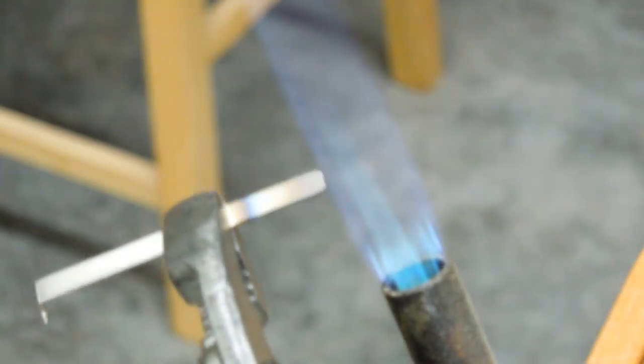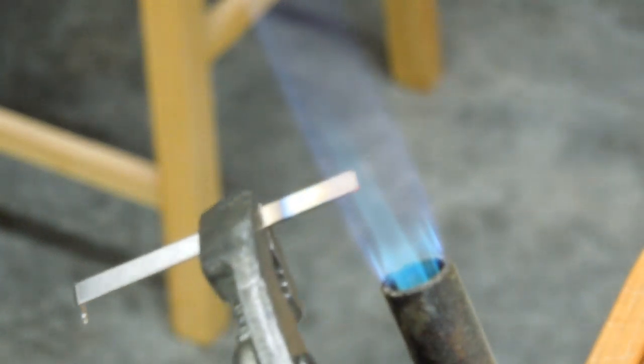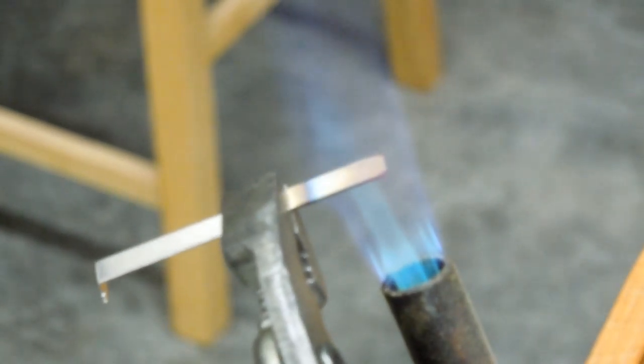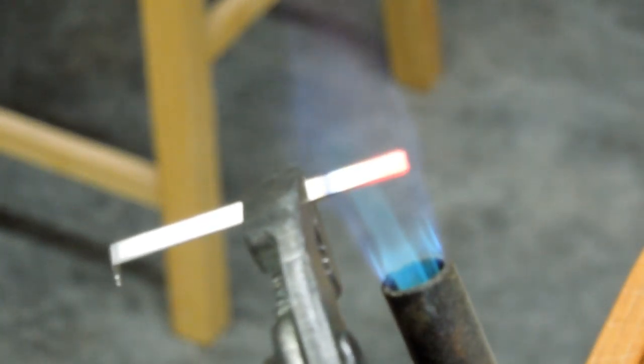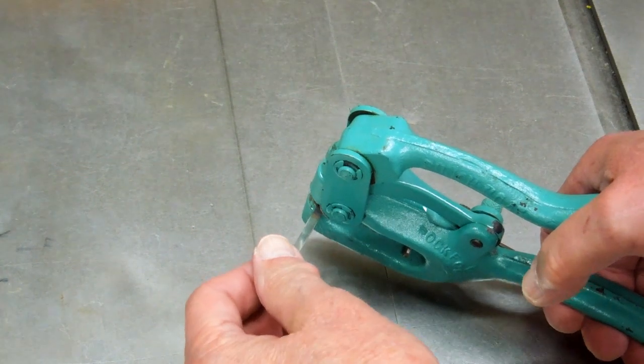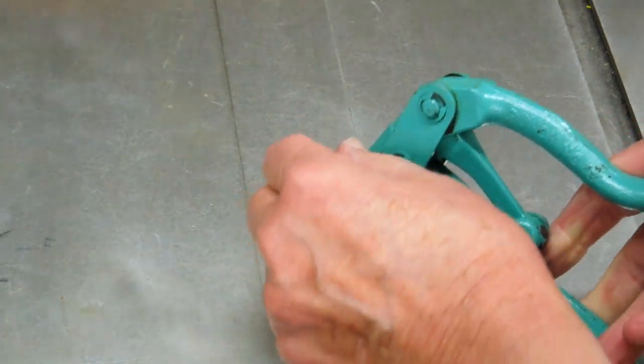I'm going to grab this with a pair of pliers and use it as a heat sink. I just want to heat the end of this until it's bright red. Spring type material. I'm going to soften this up a little bit. See if I can punch it.